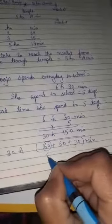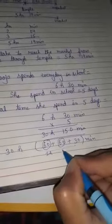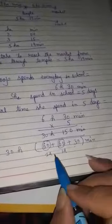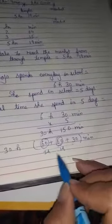60 minutes means 1 hour. That also 60 minutes means 1 hour. Two hours total.